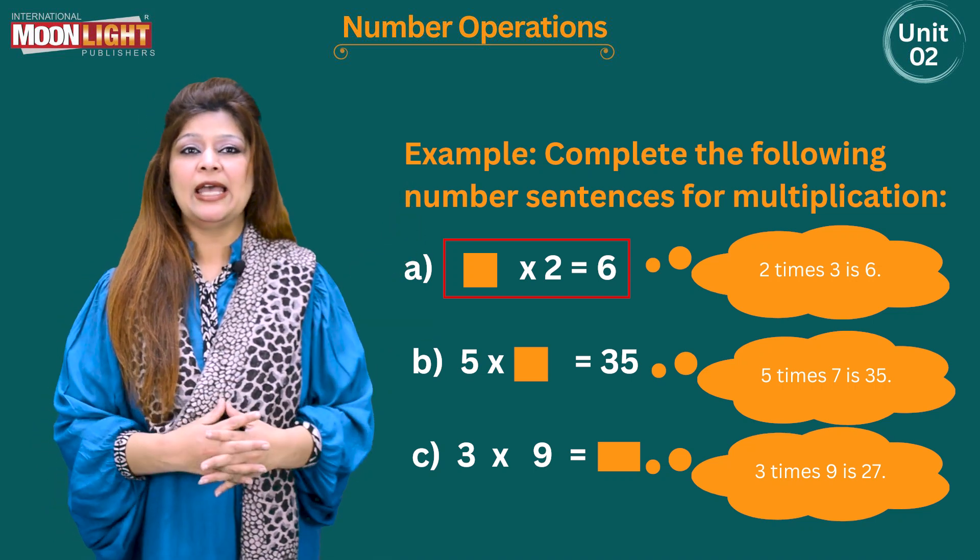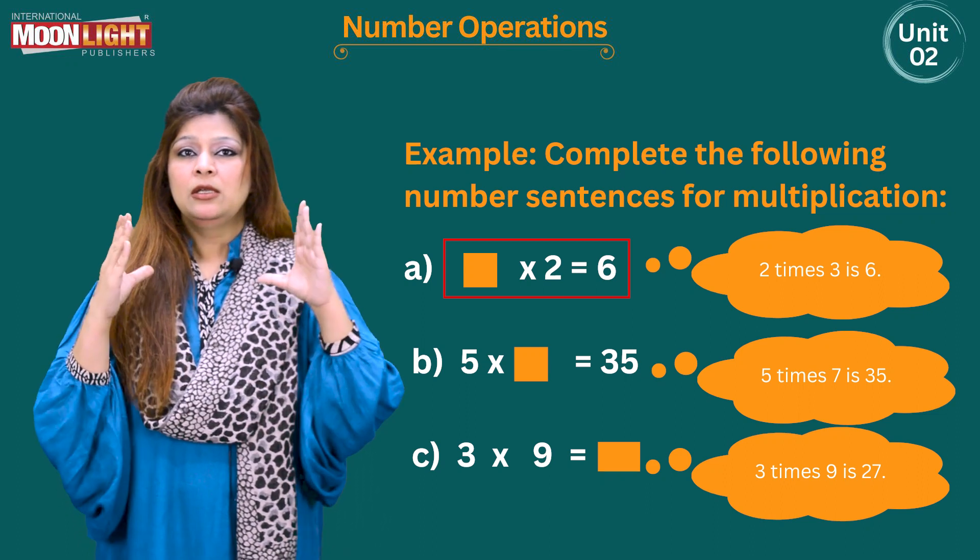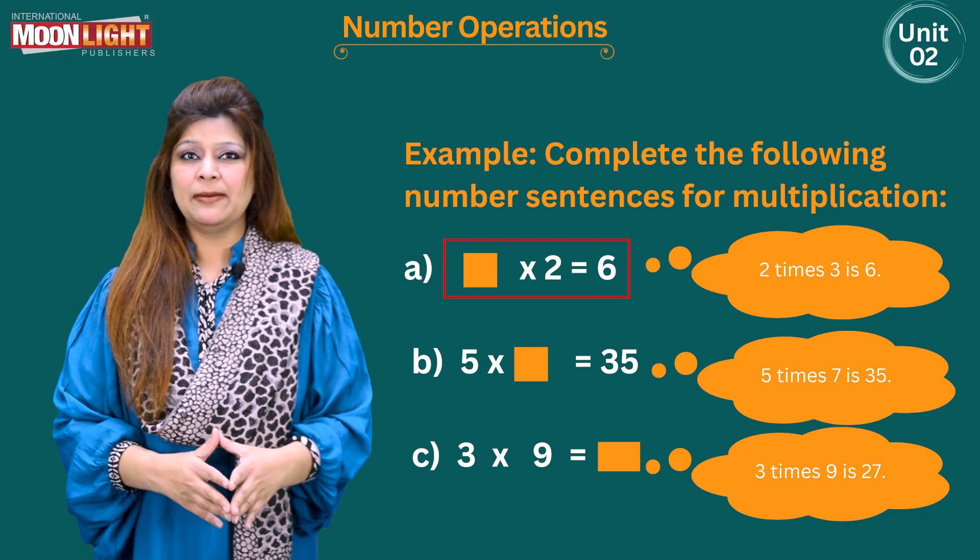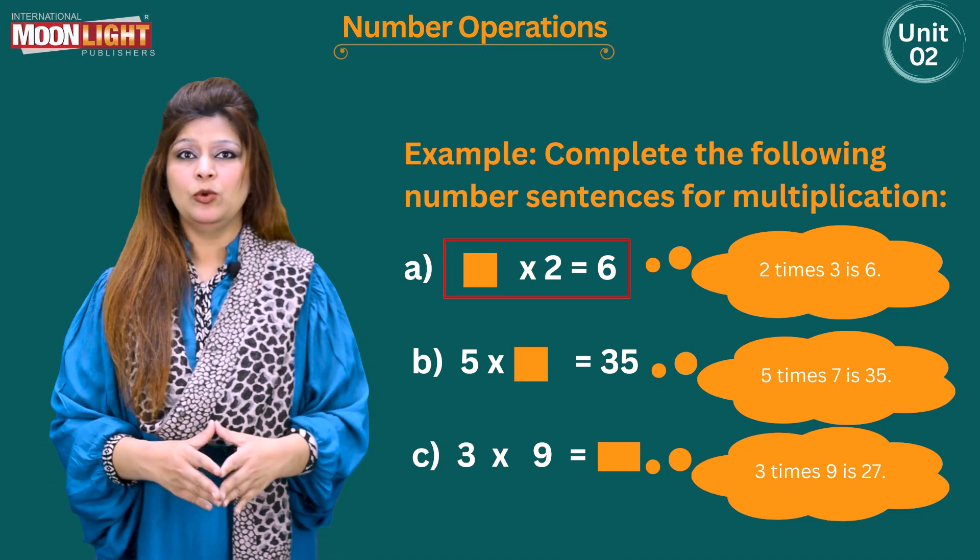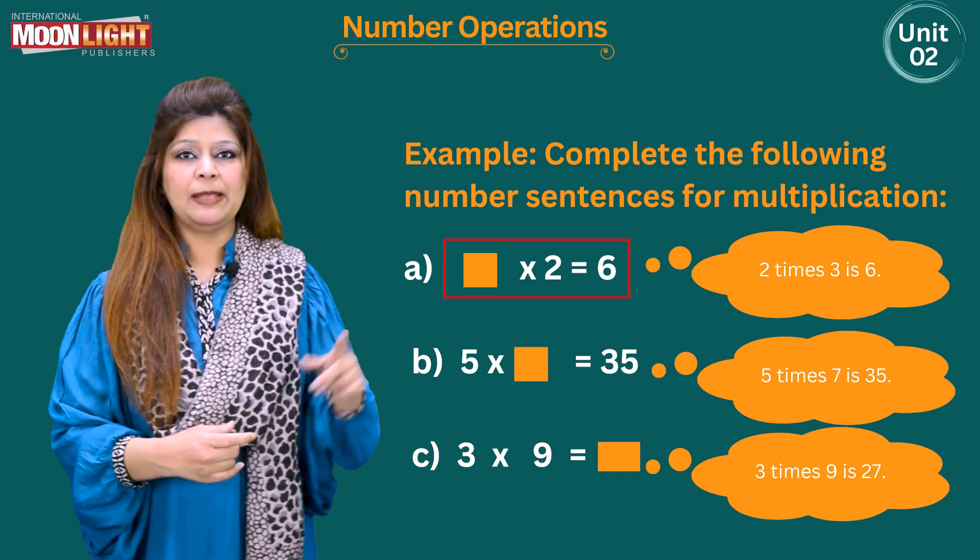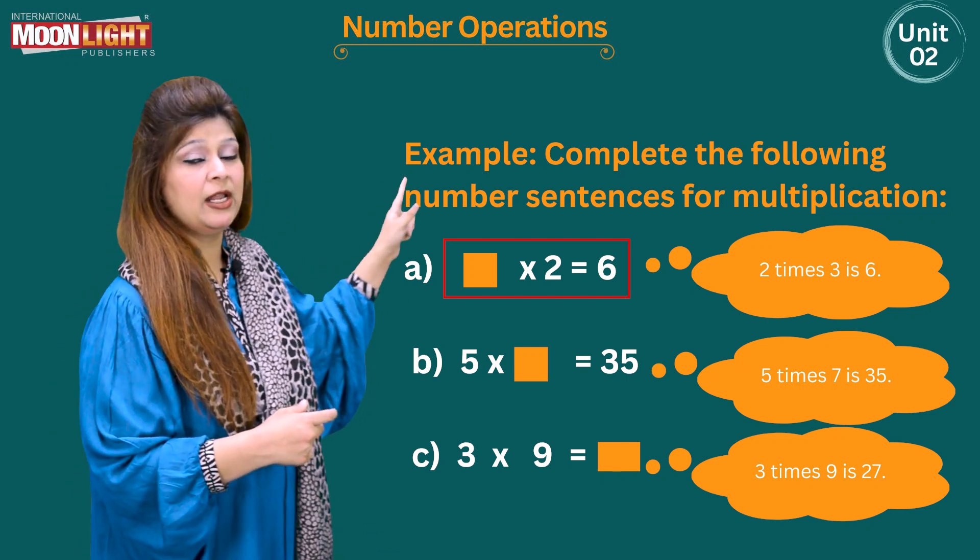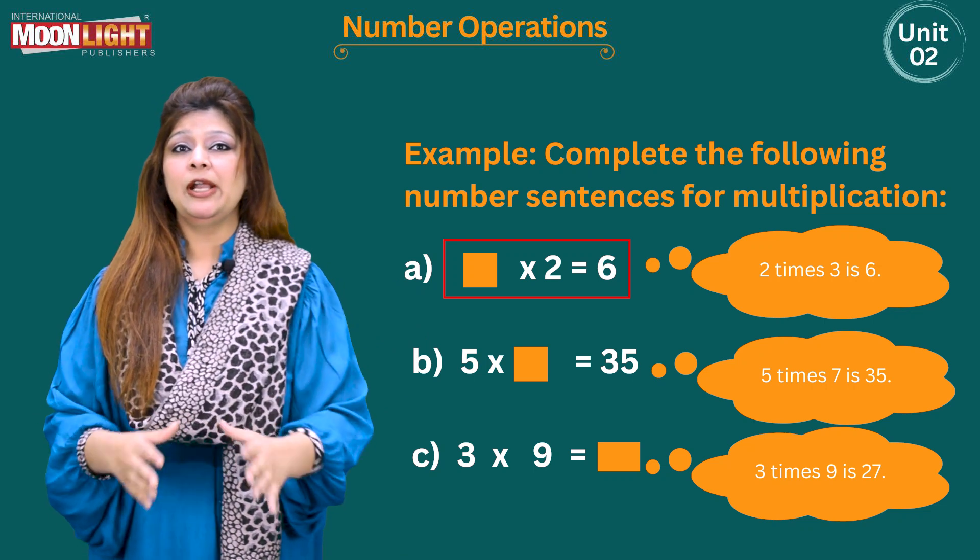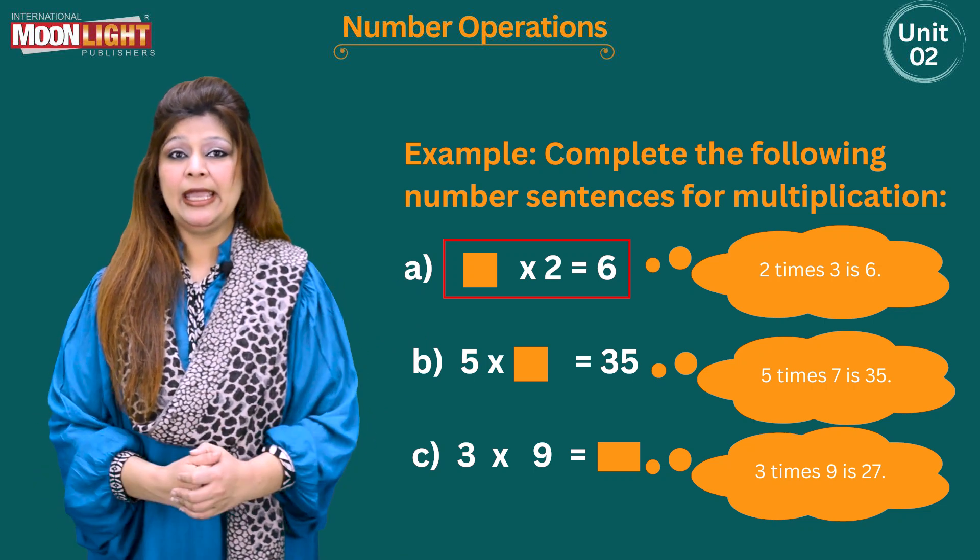You can see that the first number is missing. We need to find out the first number. So what we are going to do, we are going to recall 2 times table because 2 is given over here, and we are going to read up to the table that we are going to get the number 6.